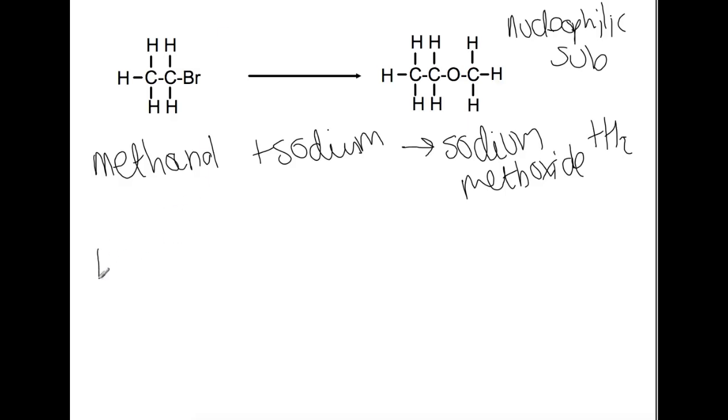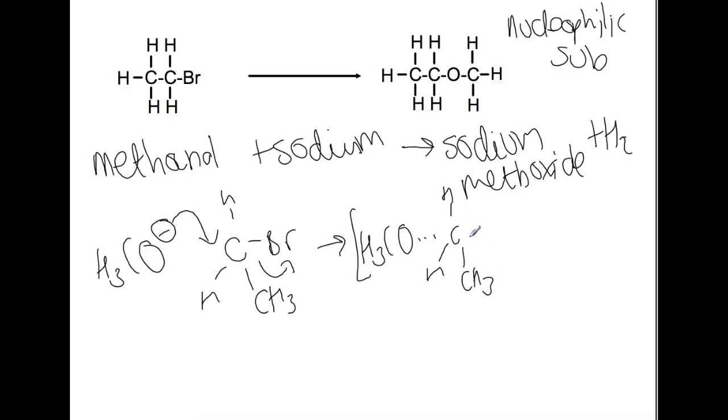The nucleophile looks like this. And again we're going to draw the haloalkane in a tetrahedral arrangement. And as this is another primary haloalkane you'll get an SN2 reaction. So the nucleophile will attack the carbon and the bromine will start to break. You will have the five-membered transition state. And then finally the bromine bond will break to leave the ether.